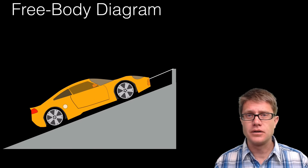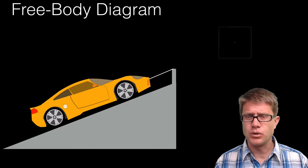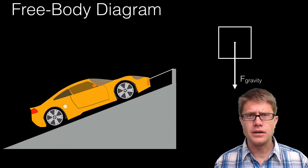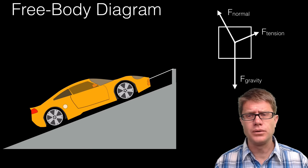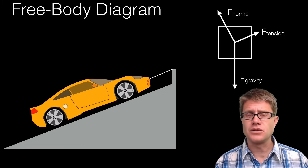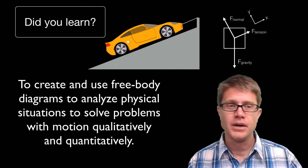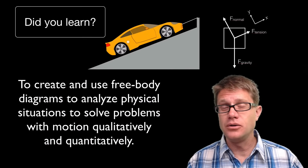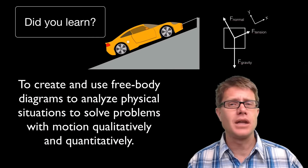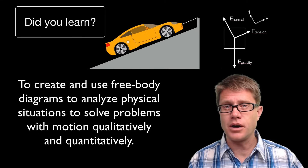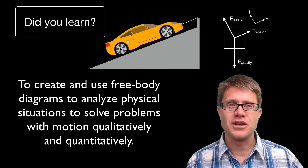Let's try another one: a car that is hooked up and motionless. We have gravity acting down, a normal force at an angle, and a tensional force holding it in place. A vector sum of these shows there is no acceleration. Set up a coordinate system accordingly. Did you learn to create and use these free body diagrams? We can use them both qualitatively and quantitatively to solve problems. I hope so, and I hope that was helpful.